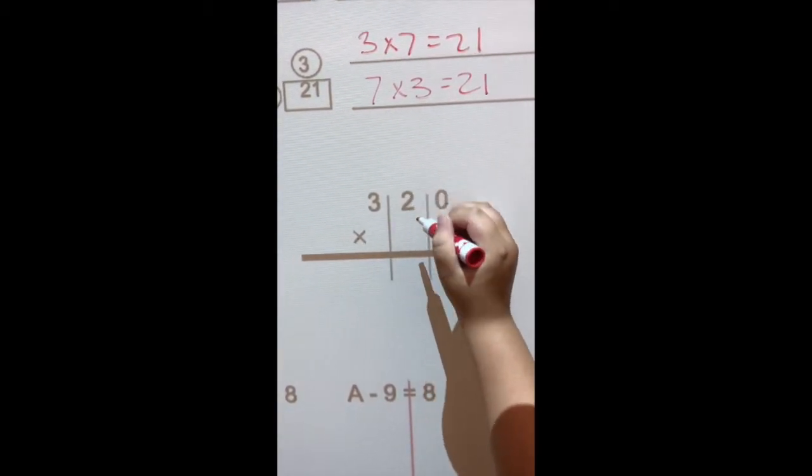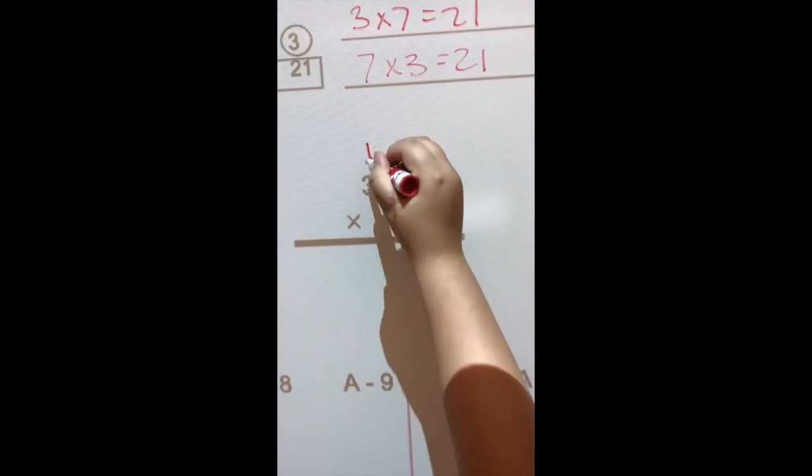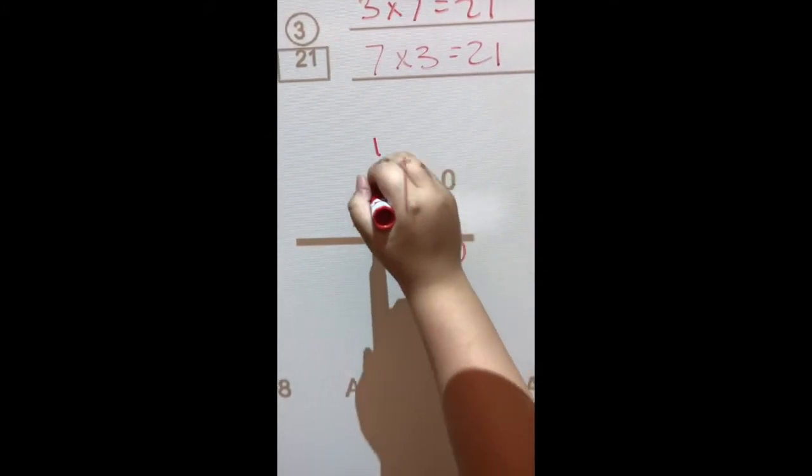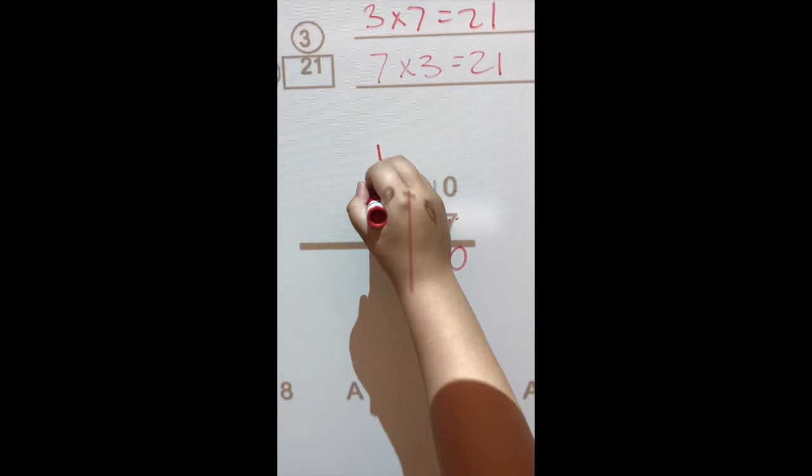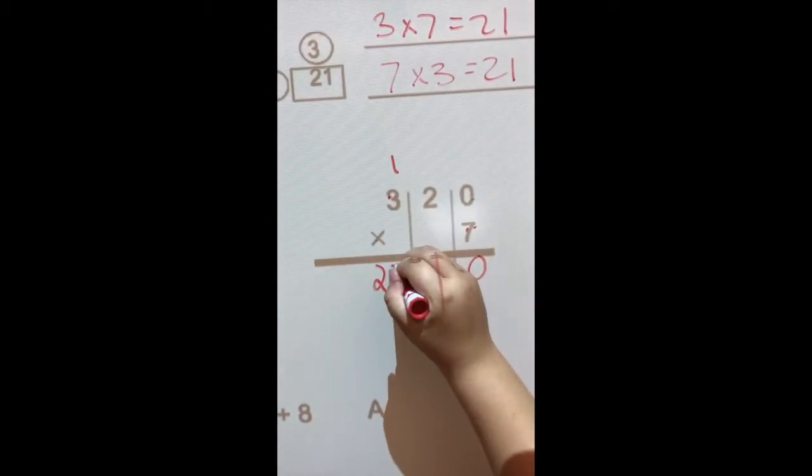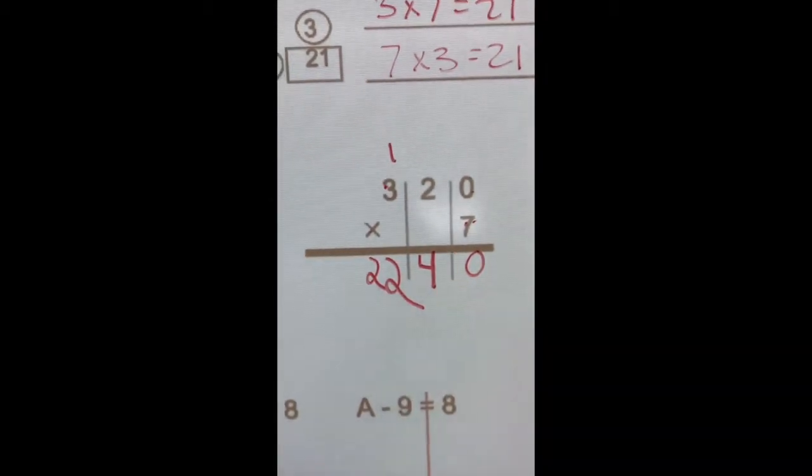7 times 2 equals 14. Nice. 7 times 3 equals 21 plus 1 equals 22. Very nice. Okay.